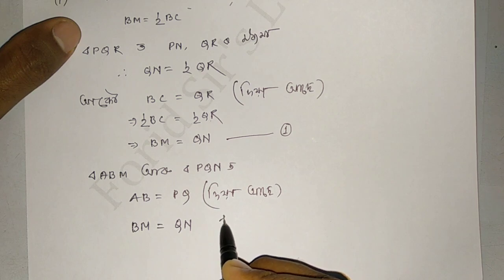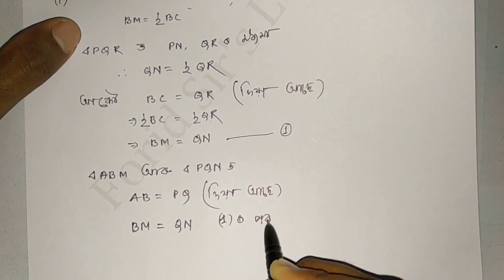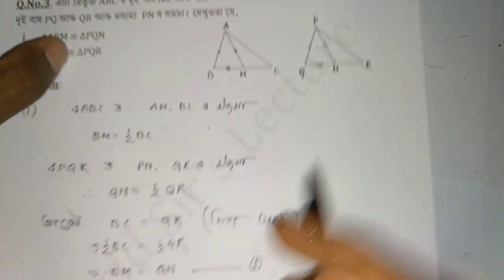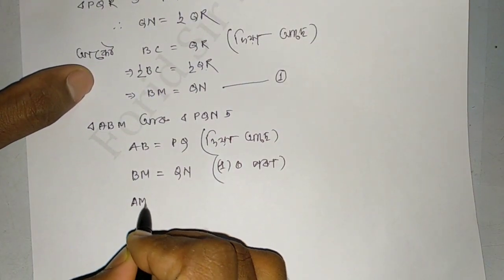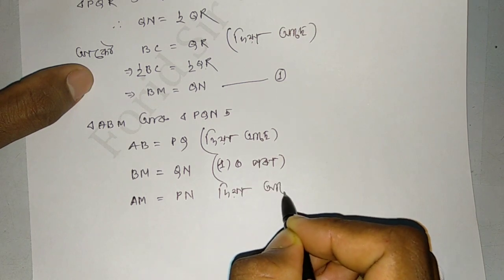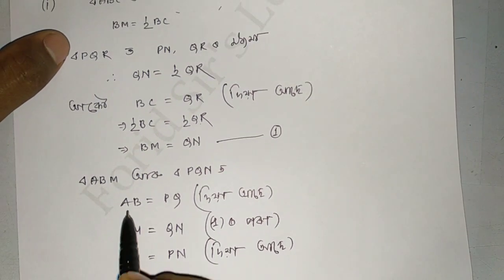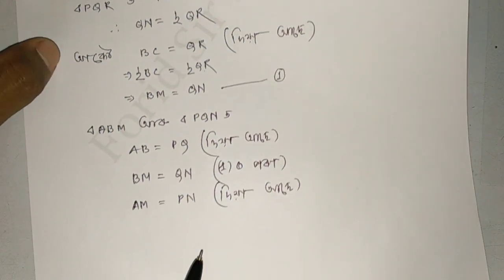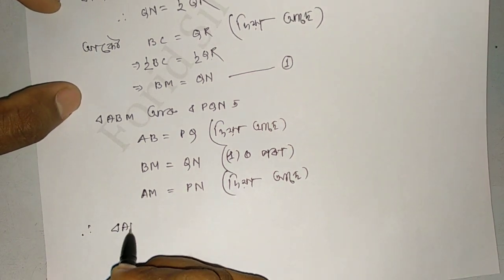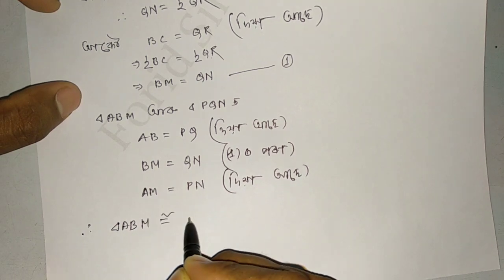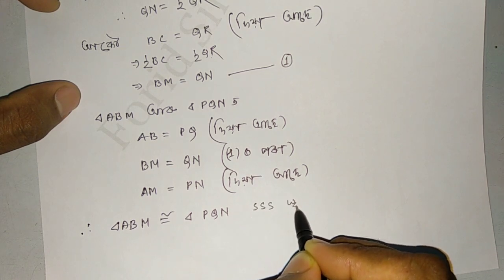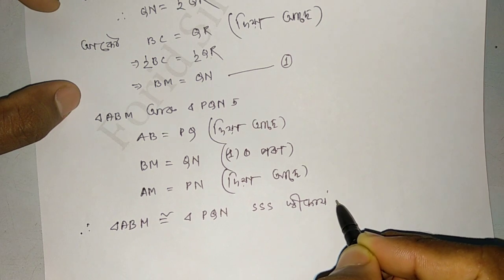Continuing with the proof, we have shown that triangle ABM and triangle PQN satisfy the conditions. So this is ABM and we have triangle PQN. Using the side-side-side congruence criterion, we can prove that these triangles are congruent.